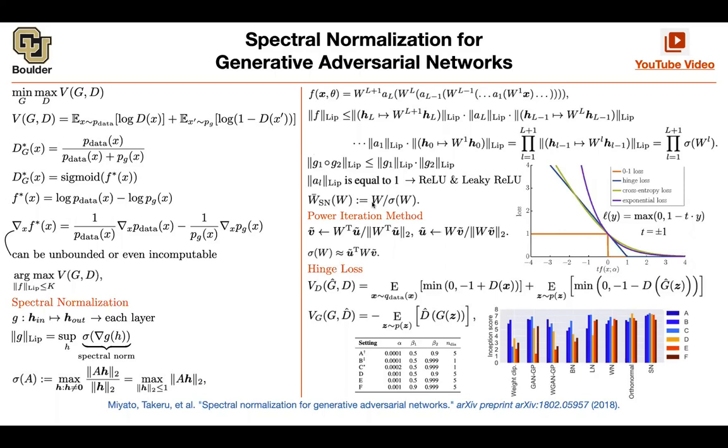The other contribution is using the hinge loss. The hinge loss is perhaps going to correspond to another distance between two distributions. Perhaps we don't have a name for it, but that's going to give you another distance between the real distribution and the generated distribution. Then you're minimizing some distance.